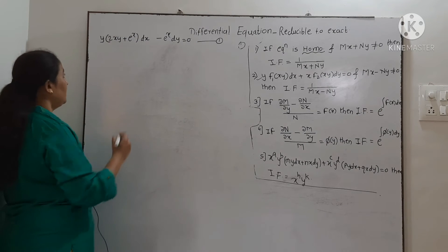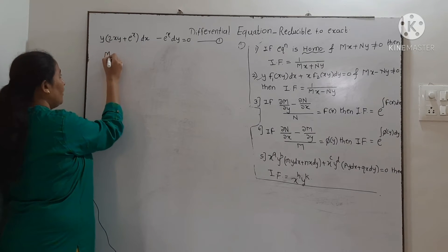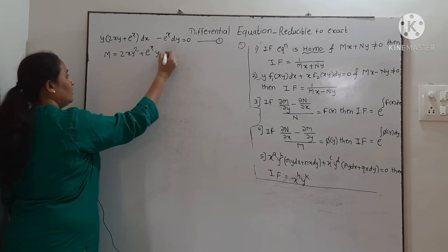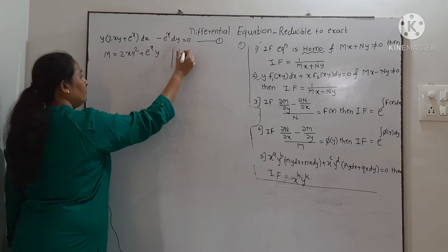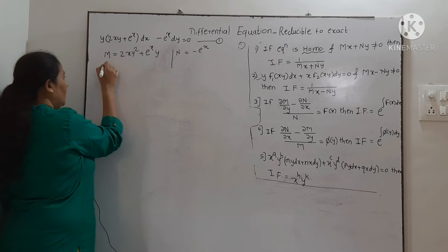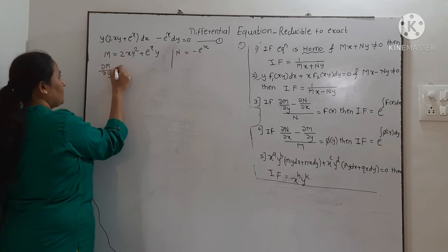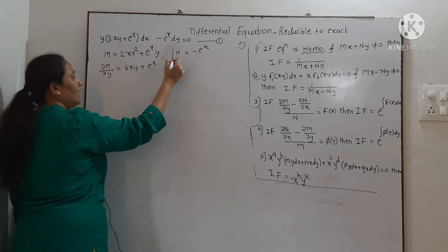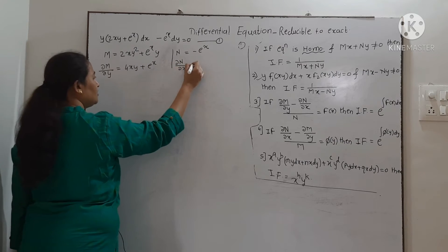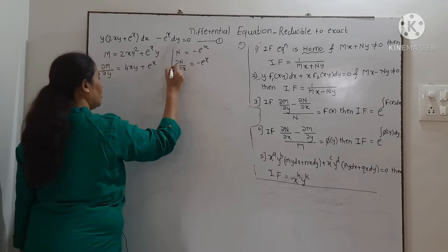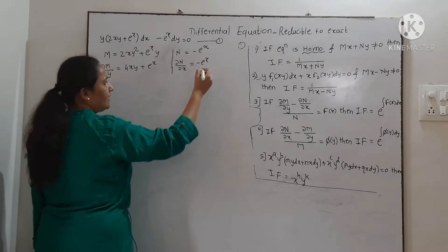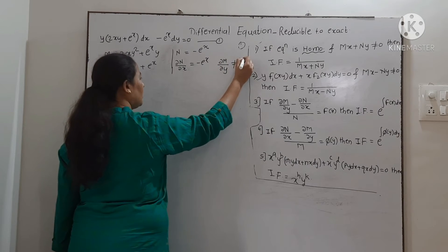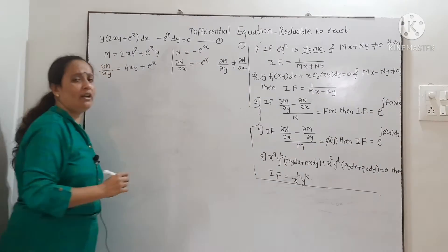Next example: comparing with M dx + N dy, we get M = 2xy² + eˣ·y and N = −eˣ. Finding ∂M/∂y = 4xy + eˣ, and ∂N/∂x = −eˣ. Since these are not equal, ∂M/∂y ≠ ∂N/∂x, so the equation is not exact.